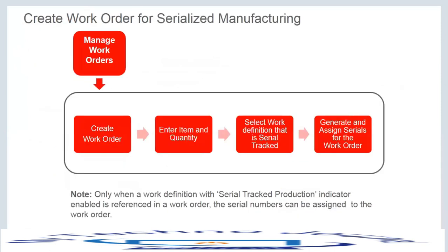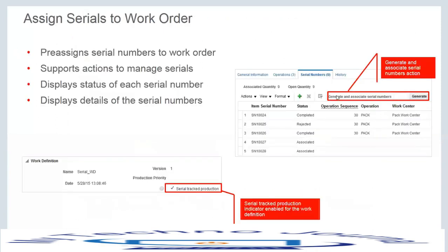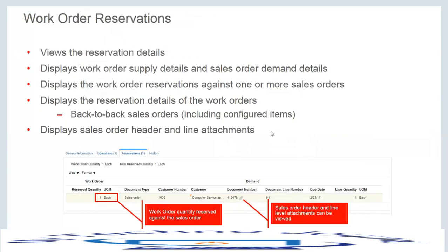For a serialized work order, the process is the same, with the only difference being that you must generate and associate serial numbers at the start. For reservations — for example in a back-to-back scenario — a reservation tab is automatically enabled on the work order, showing the sales order number, customer, quantity, and line number details.